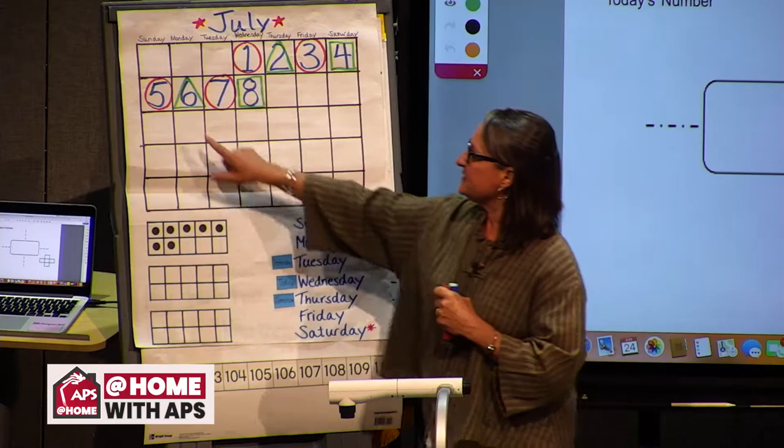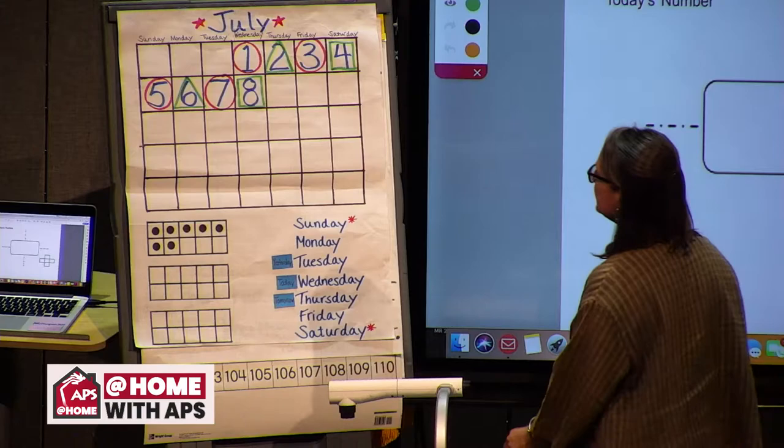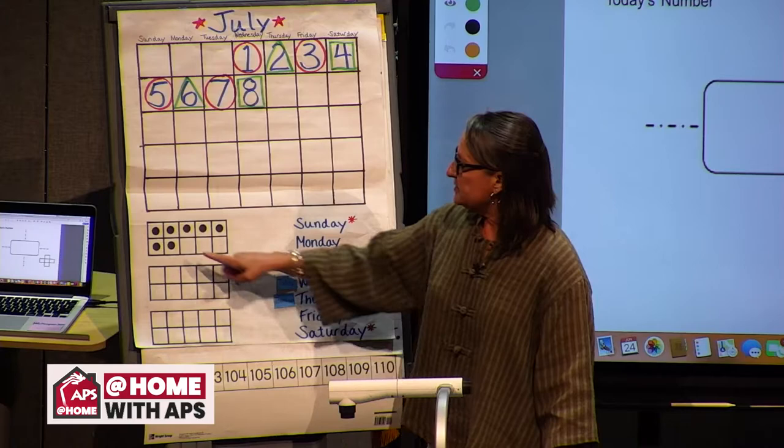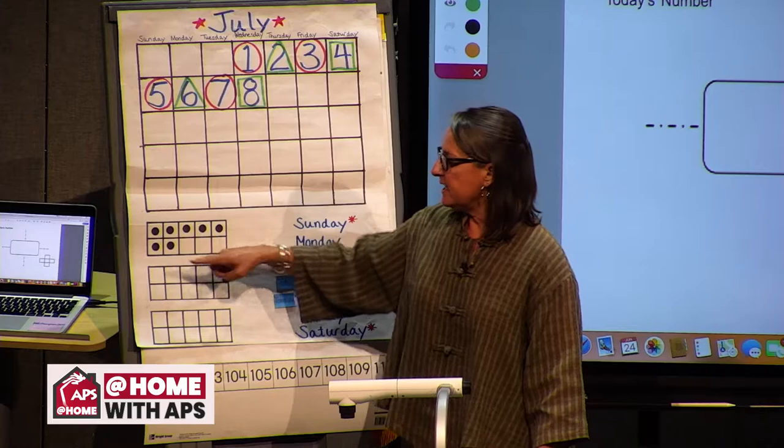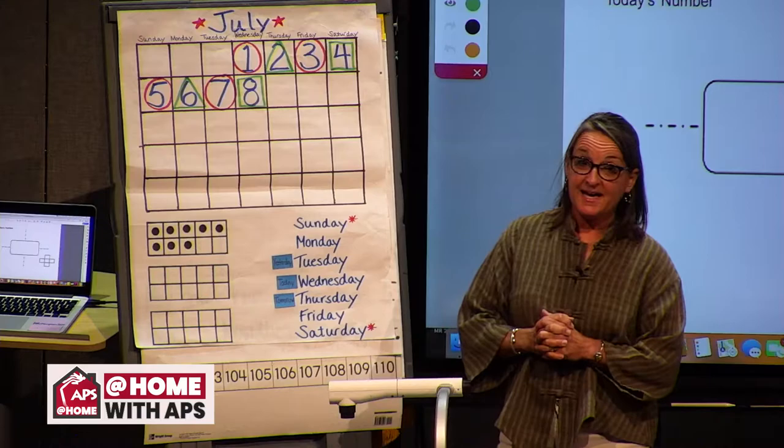Let's go ahead and fill in our date on our 10 frame. Yesterday was the 7th, so we had five dots across the top and two on the bottom — we're going to add one more. Five filling the top, three on the bottom. And we know that five and three gives us eight, which is our number of the day.